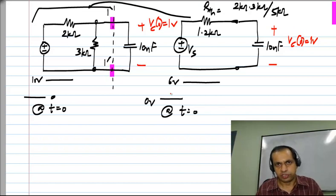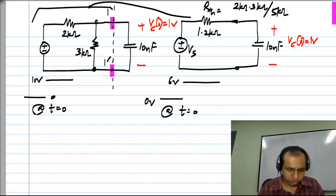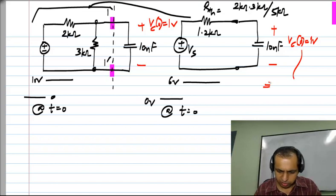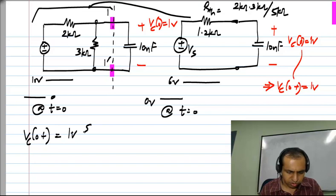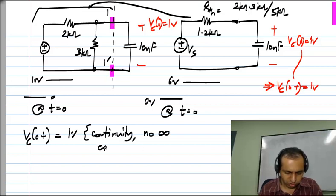So we have calculated all of these things in general terms. This means that we see just after the step VC of 0 plus is also 1 volt. Now, we know the general form of the solution. You can do this in many ways. So VC of 0 plus is 1 volt. This is because of continuity and no infinite currents.